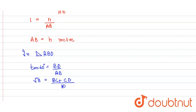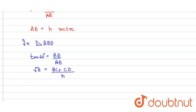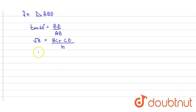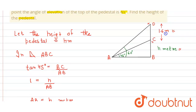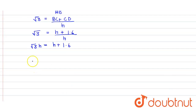Substituting the values, root 3 times h equals h plus 1.6. After further solving, we get h equals 1.6 divided by root 3 minus 1.